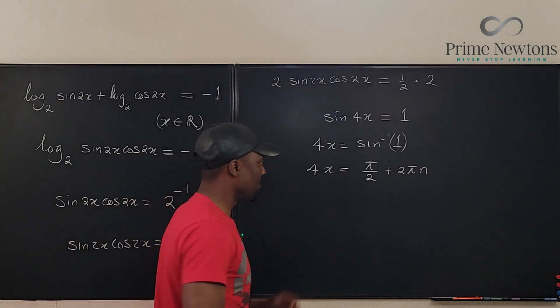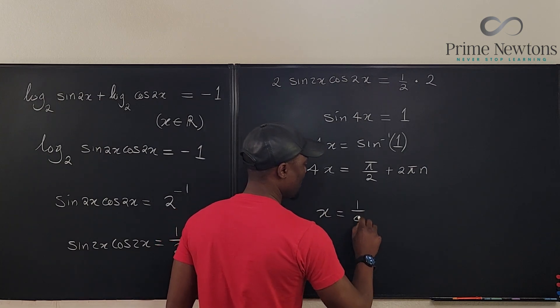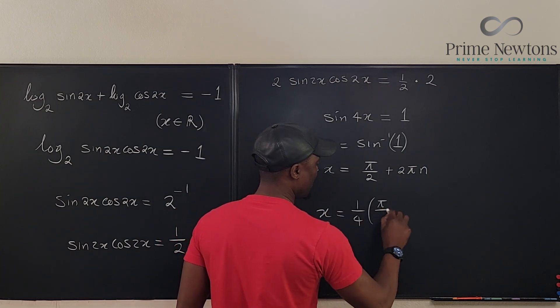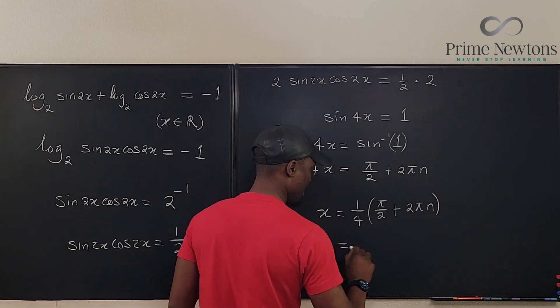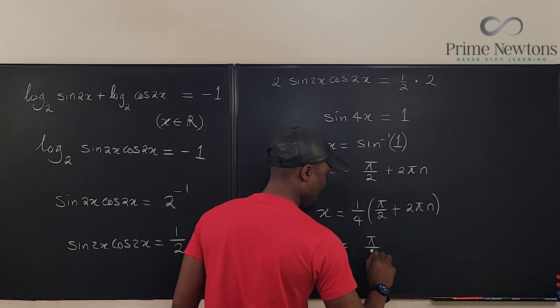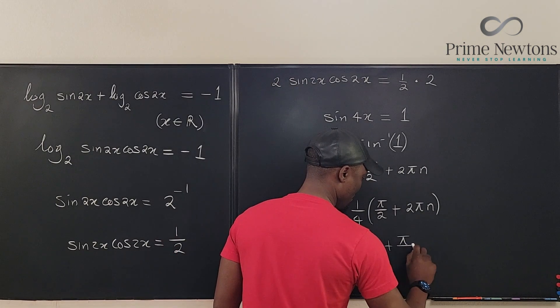So if I divide by 4, I'm going to get x equals 1 over 4 of π over 2 plus 2π n, and that gives me π over 8 plus π over 2 n.